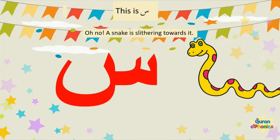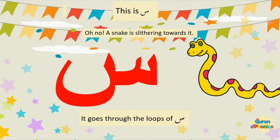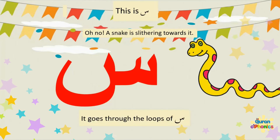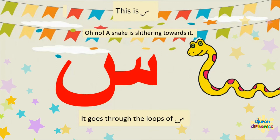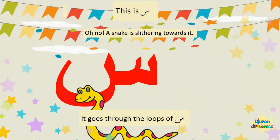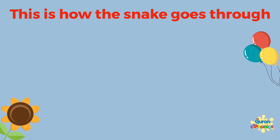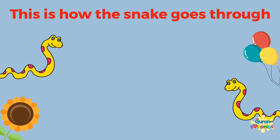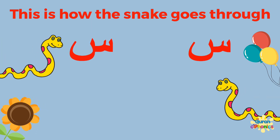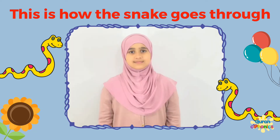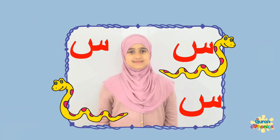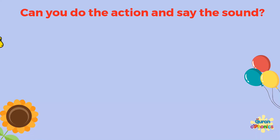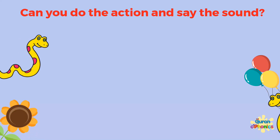Oh no! A snake is slithering towards it. It goes through the loops of S-S-Seen. This is how the snake goes through S-S-Seen. Can you do the action and say the sound?